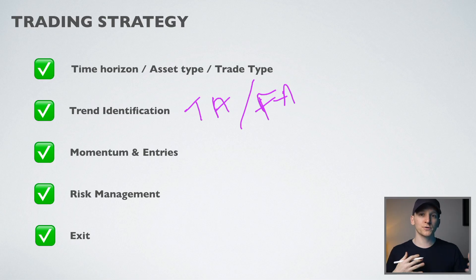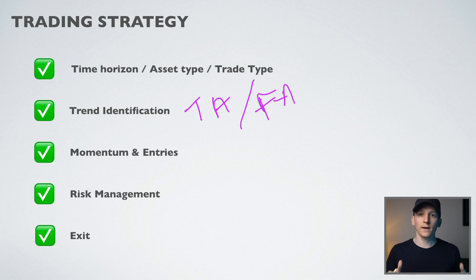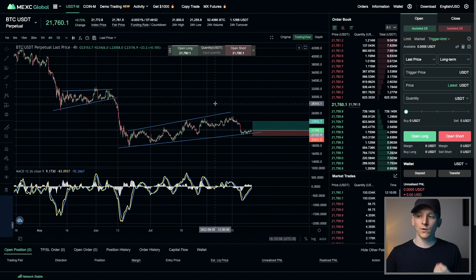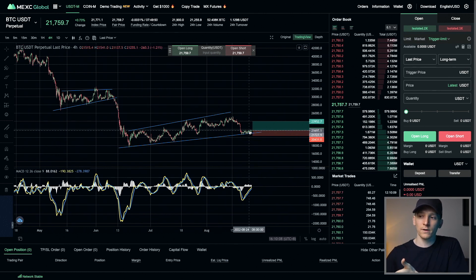When we're talking about trend identification, there are only two things that you can do: you can either buy and go long, or you can sell and go short. There's only two things you can do with a trade. The only choice that you have is: do you think the market is going to go up or down from here?